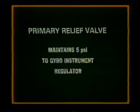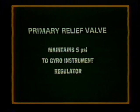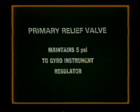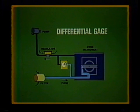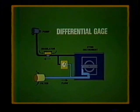A second valve, the primary relief valve, maintains air pressure to the gyro instrument regulator. Generally, this is about 5 psi. When maintaining aircraft pneumatic systems, a good rule of thumb to remember is that pressure alone does not determine the speed at which the rotor of a gyro spins. This is the job of the airflow, which may be indicated by the differential pressure across the gyro.